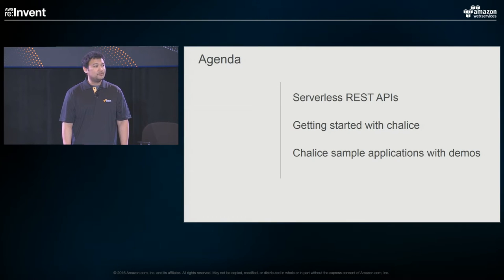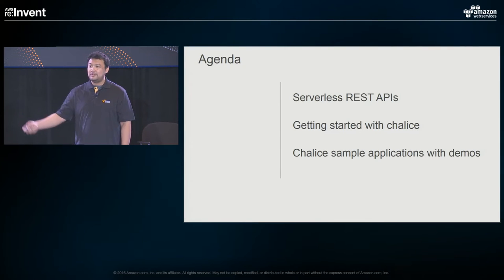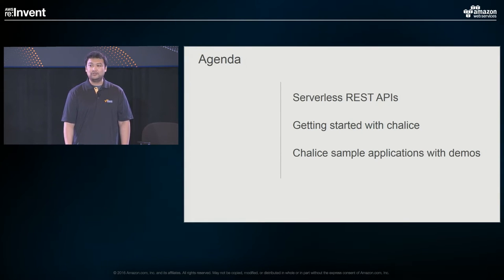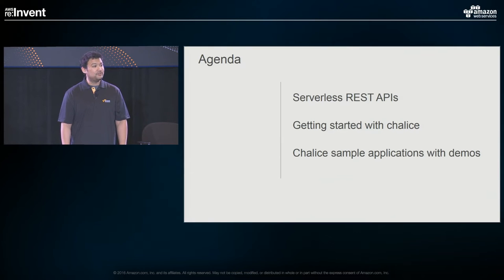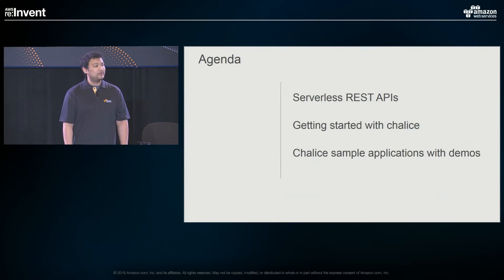Today I'm going to be talking about a framework I've created called Chalice, which is a serverless microframework for Python. In a nutshell, it allows you to quickly create serverless REST APIs and deploy them to AWS. It can get you up and running in less than 30 seconds, and we'll see a lot of examples of that throughout the talk. There are really three things I want to cover today: serverless REST APIs compared to EC2-based APIs, a tour of Chalice's main features, and sample applications showing real-world use cases.